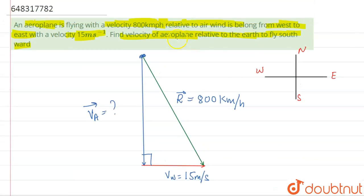So over here, the find the velocity of aeroplane with respect to the earth. This will come out to be 221.71 meter per second. So this is basically our answer. Thank you.